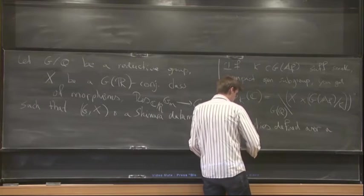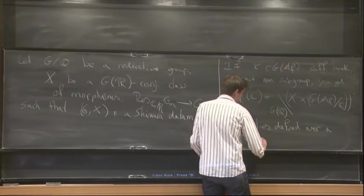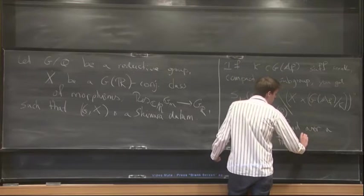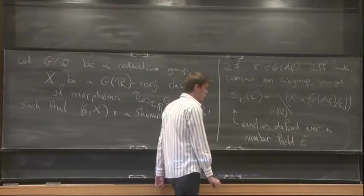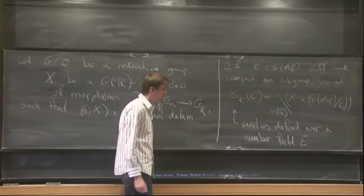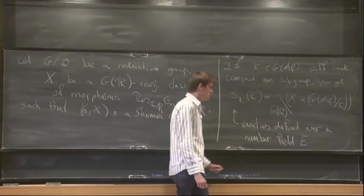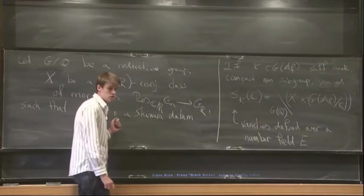So that number field is called the reflex field. These varieties are smooth and quasi-projective. So this number field, I'm not going to define it, but it's canonically associated to your Shimura datum.